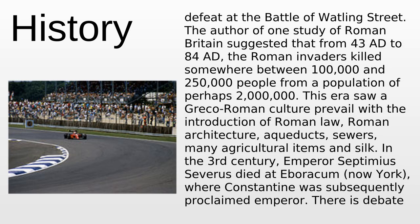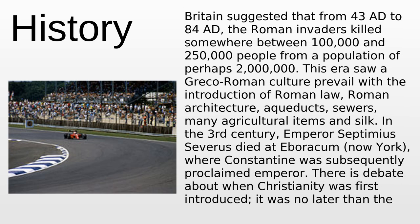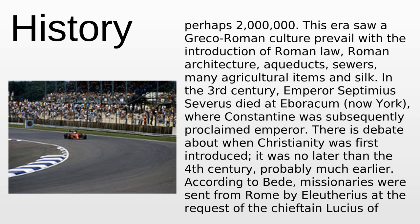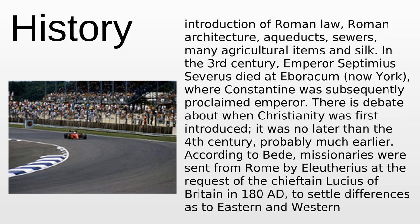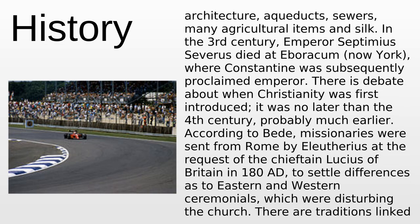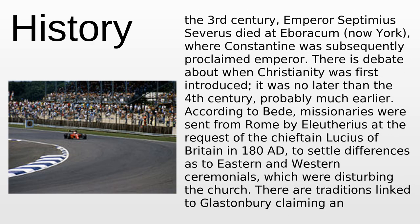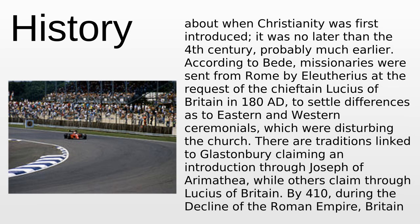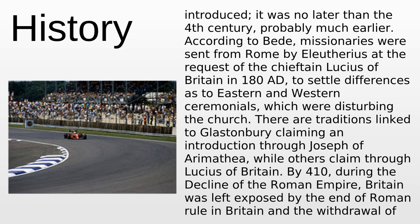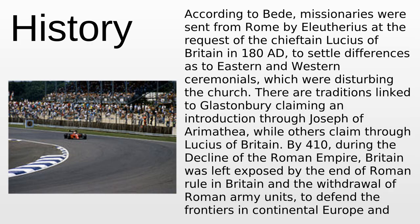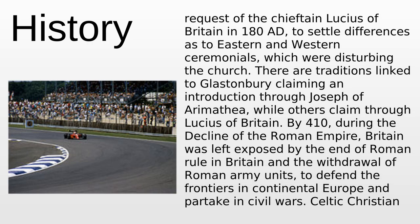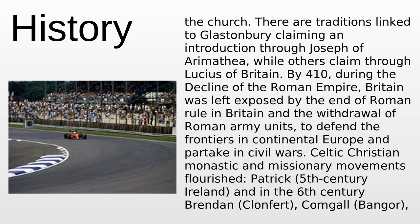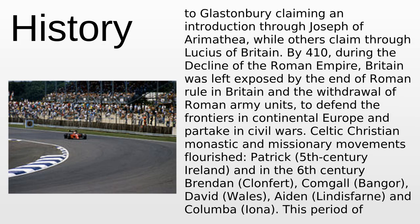From 43 AD to 84 AD, the Roman invaders killed between 100,000 and 250,000 people from a population of perhaps 2 million. This era saw Greco-Roman culture prevail with the introduction of Roman law, architecture, aqueducts, sewers, and agricultural items. In the 3rd century, Emperor Septimius Severus died at Eboracum, now York, where Constantine was subsequently proclaimed emperor. Christianity was introduced no later than the 4th century, probably much earlier. According to Bede, missionaries were sent from Rome at the request of the chieftain Lucius of Britain in 180 AD.